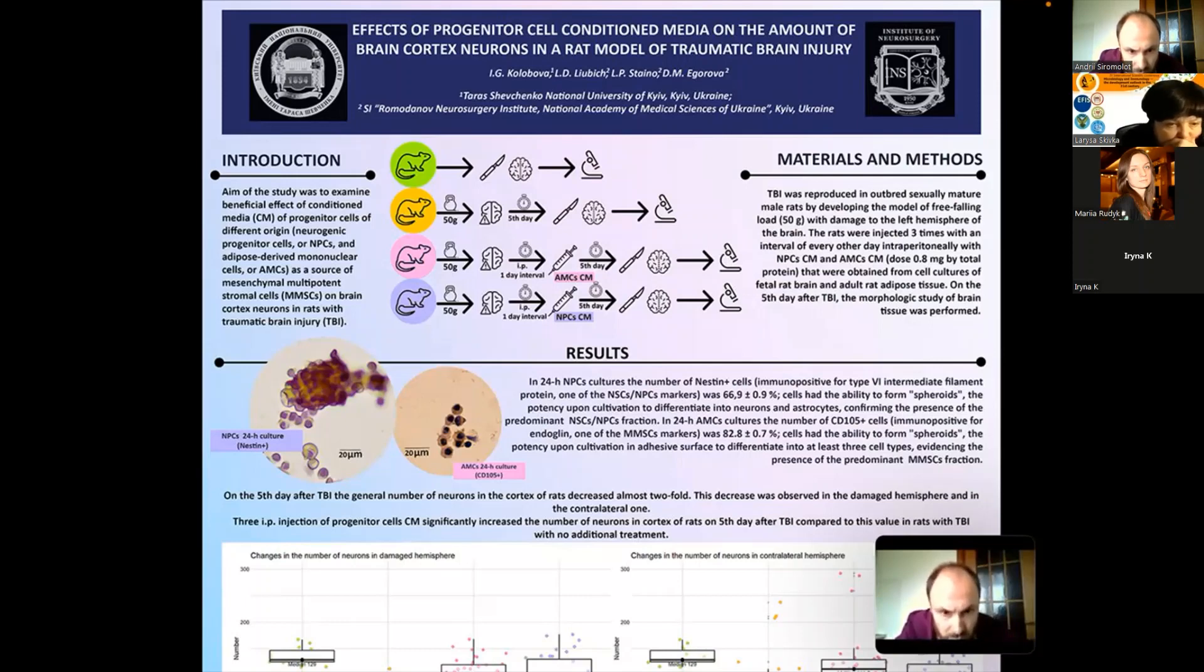The neurogenic progenitor cells cultures were characterized by one of the main markers of such cultures which is the number of nesting positive cells. You can see them here on the photo. And the number of these cells in cultures reached nearly 65 percent.